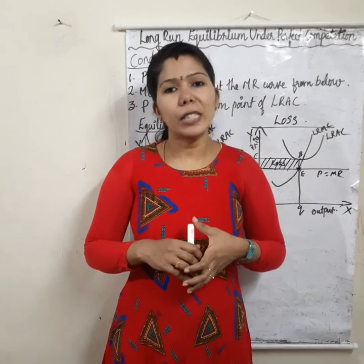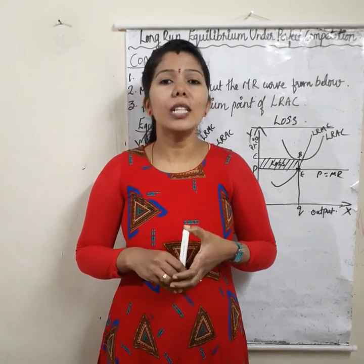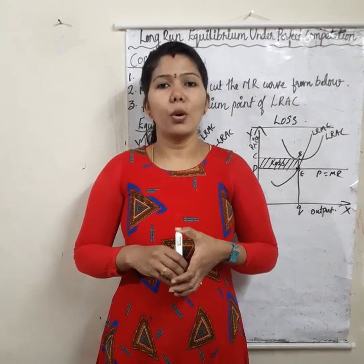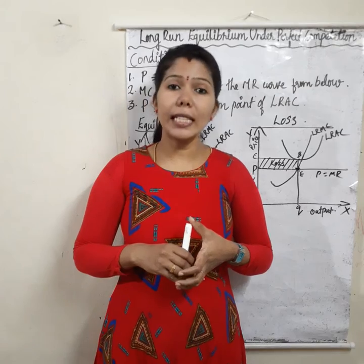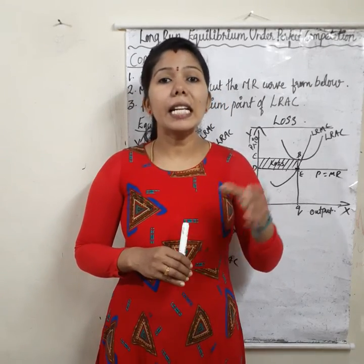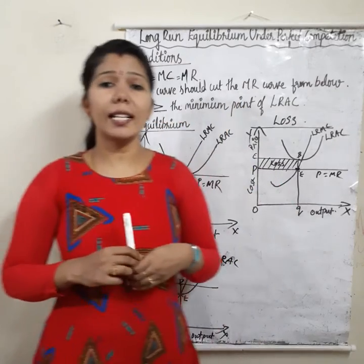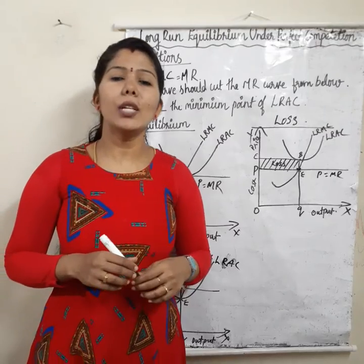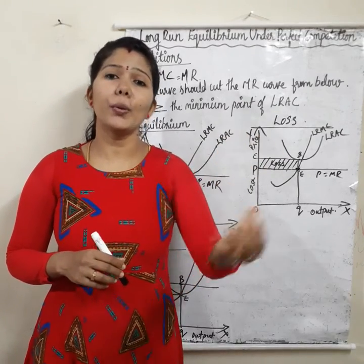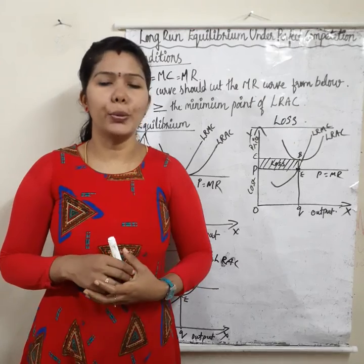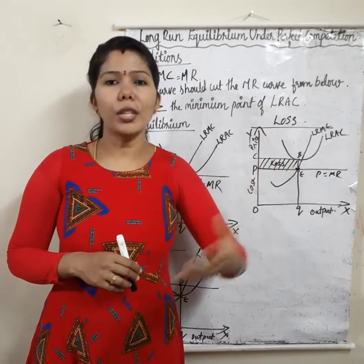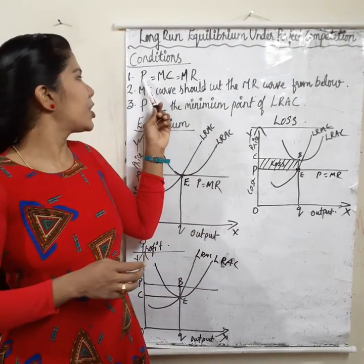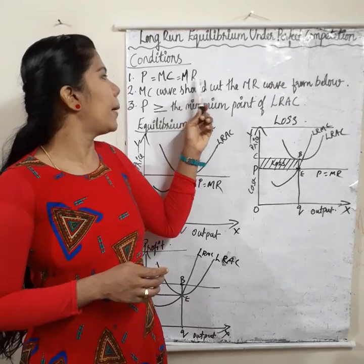Long run equilibrium under perfect competition. In order to attain long run equilibrium under perfect competition, there are three conditions. The first condition is P is equal to MC is equal to MR — price is equal to marginal cost, that is equal to MR, marginal revenue. This is very similar to short run equilibrium under perfect competition.